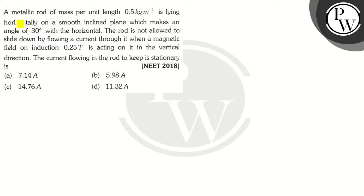Hello, let's read this question. A metallic rod of mass per unit length 0.5 kg per meter is lying horizontally on a smooth inclined plane which makes an angle of 30 degrees with the horizontal.